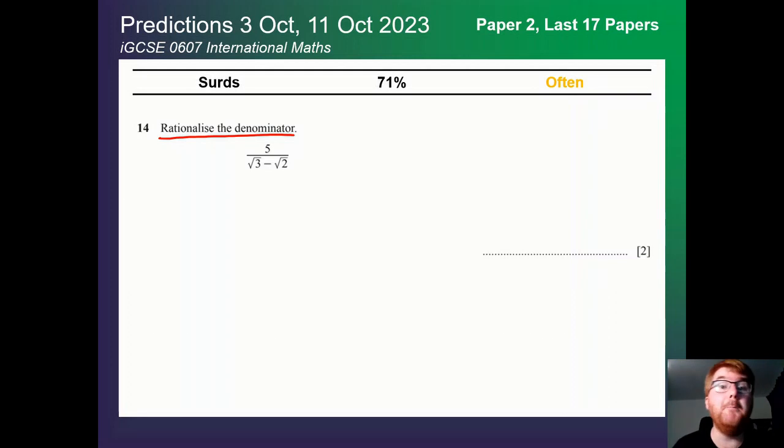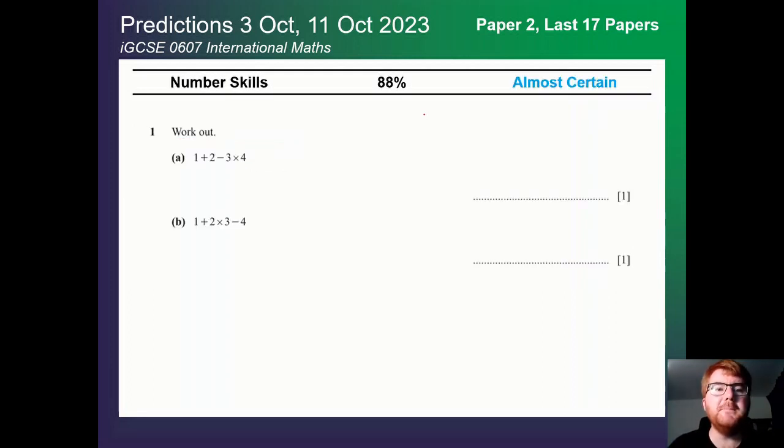On to number skills. Again, I mention this topic because it's almost certain, but usually these are the very easy questions at the start of the paper. This can include things like BIDMAS, prime numbers, cube numbers, to make sure you're getting those really basic marks in the bag.